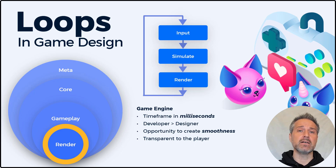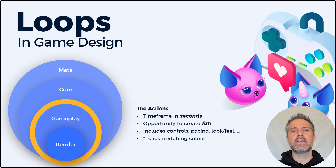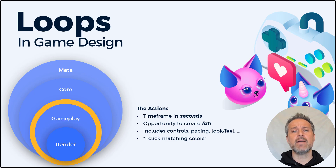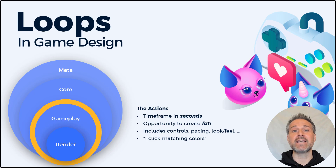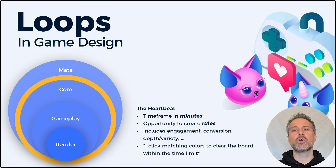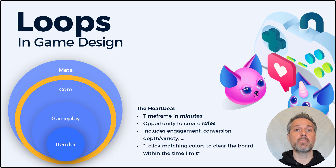Often the render loop is transparent to the player, and frankly you want it to be. The gameplay loop focuses on the actions of the player — the time frame here is just seconds and the player is thinking mostly about a fun experience. If they're playing something like Candy Crush, they might think to themselves, 'I click matching colors.' The core loop is the heartbeat of the game and introduces rules. From this context, the player may think about their own activities and say, 'I click matching colors to clear the board within the time limit.'